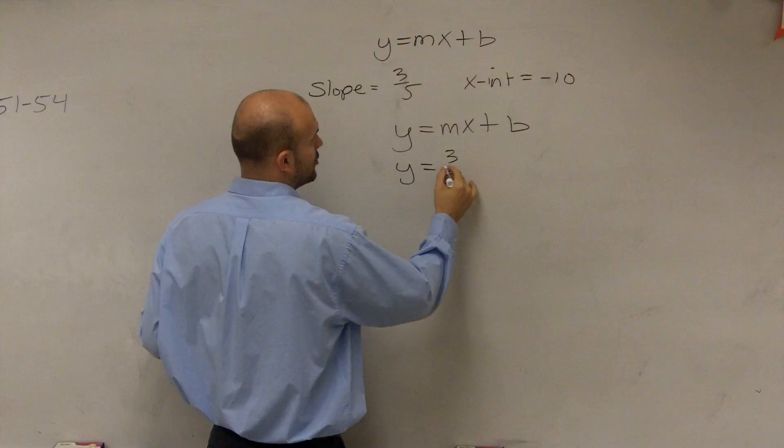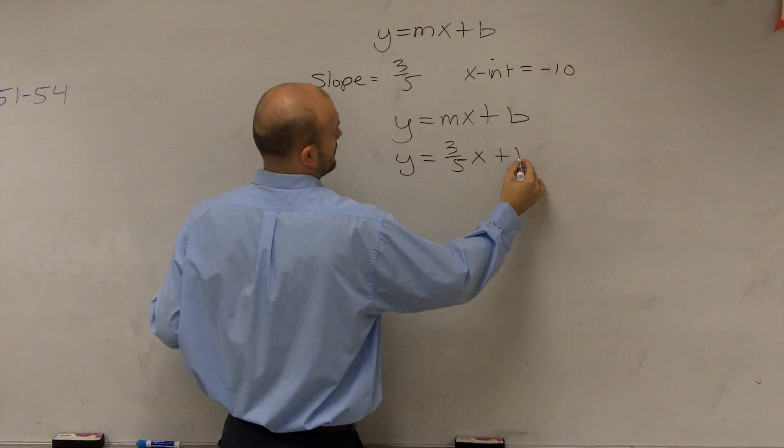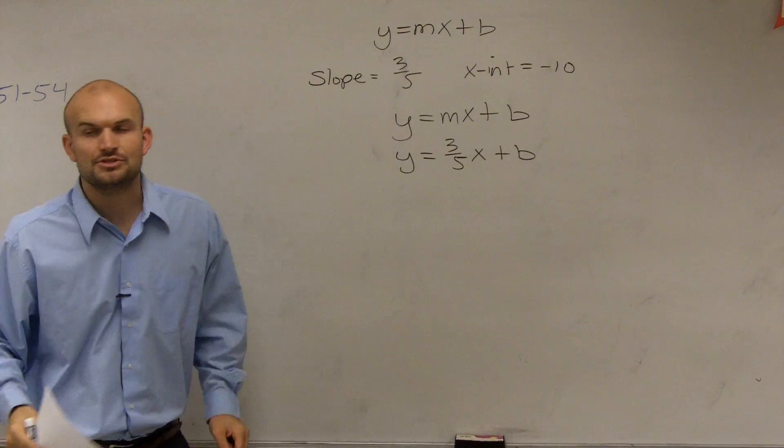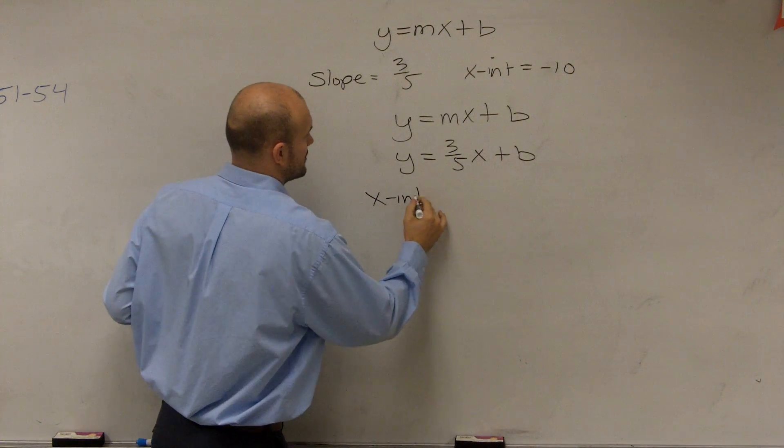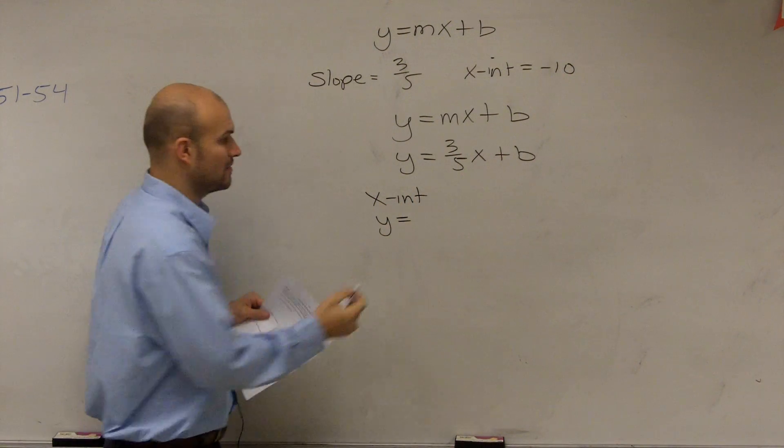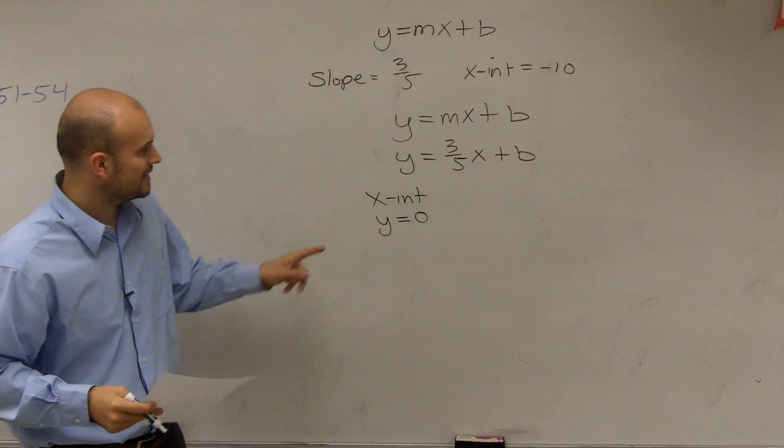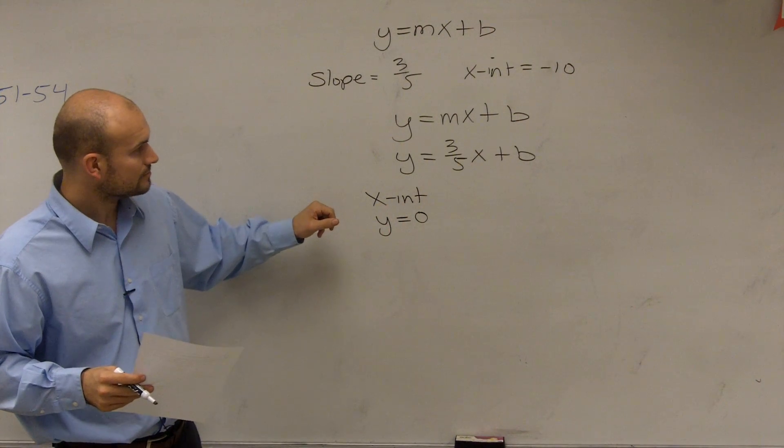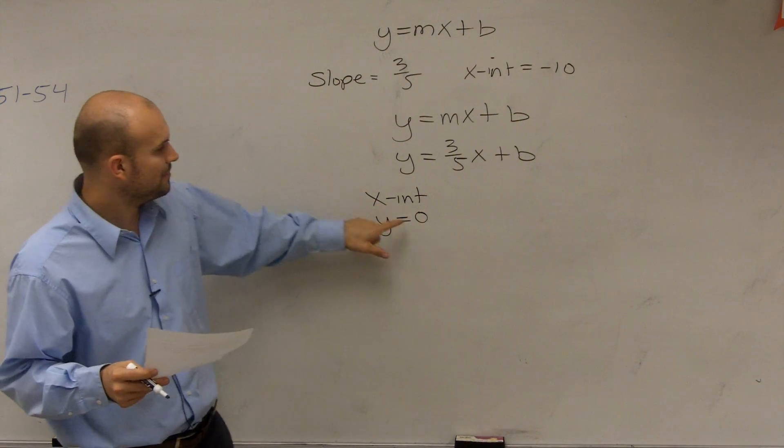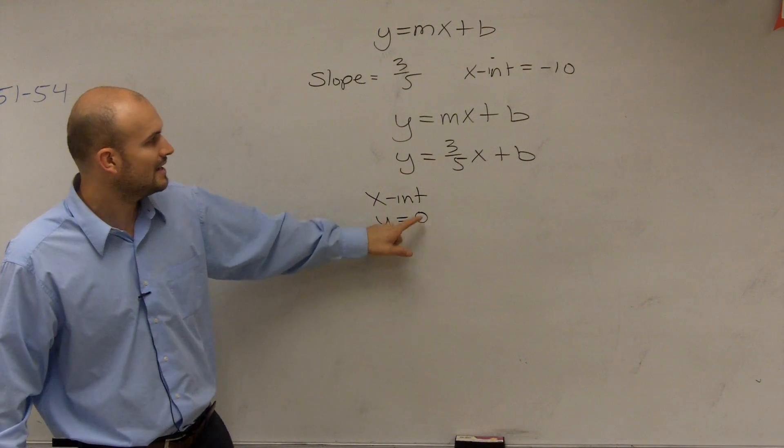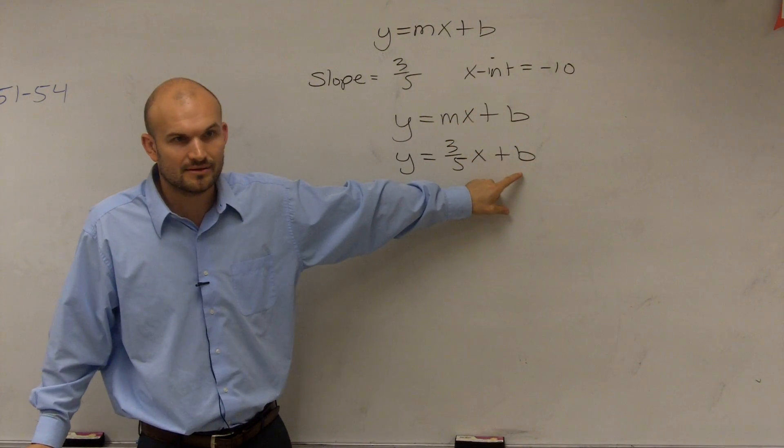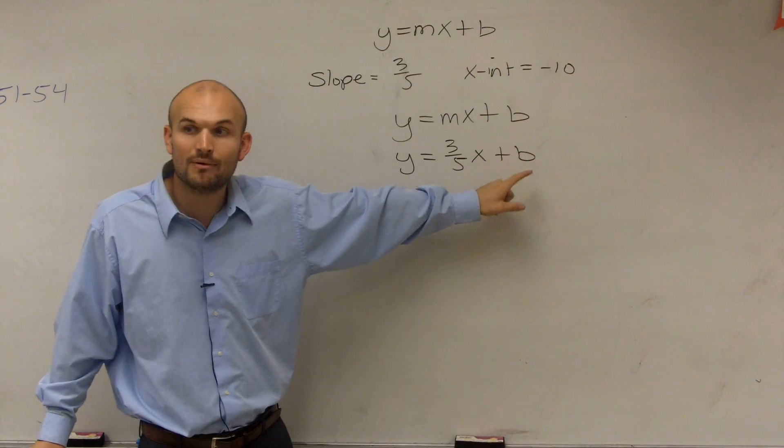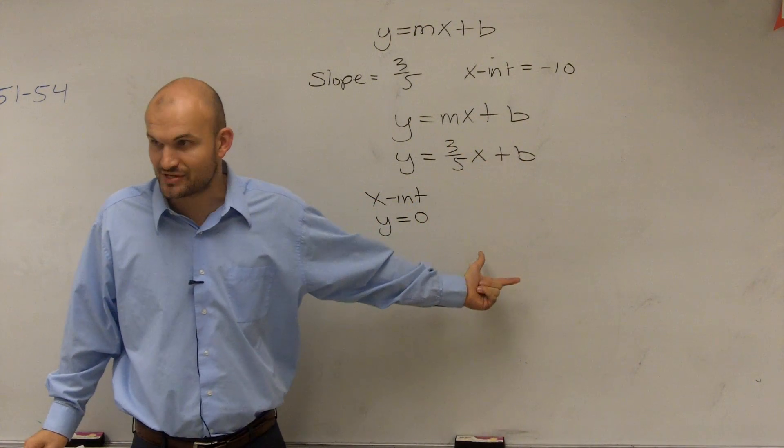y equals the slope. Now, do you guys remember when I said, find the x-intercept, what did y equal? 0. So if I plug in 0 in for y and negative 10 in for x, can I now solve for b? Yeah. And once I know what b is and slope, can I write the equation of the line?